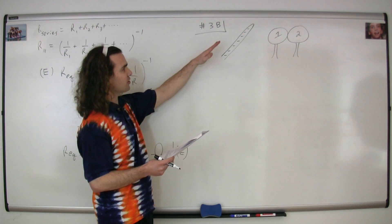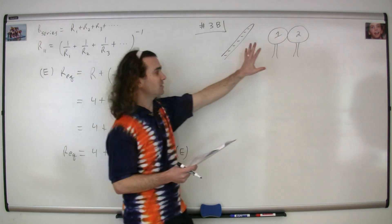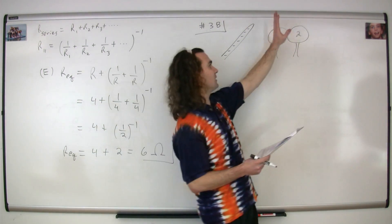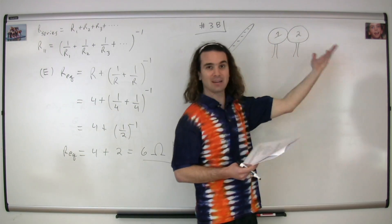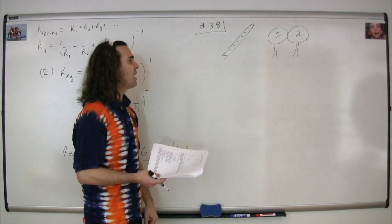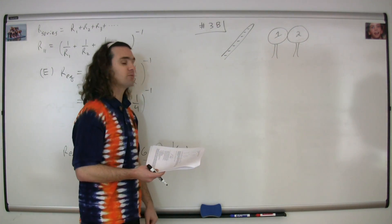A negatively charged rod is brought close to them but does not touch them. And then this sphere two is moved to the right, and the question is, what is now true of the charge on sphere two?